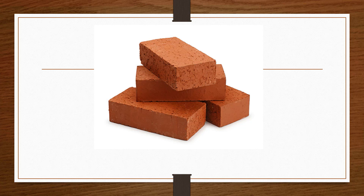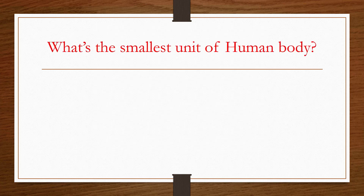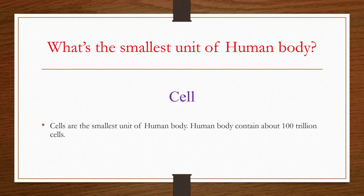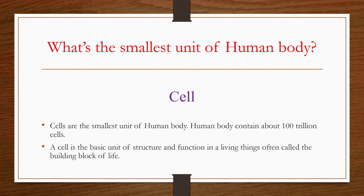Each part of the body carries out a specific function. So what is the smallest part of the human body? It is a cell. Cell is the smallest unit of the human body, and the human body contains about one hundred trillion cells. Cells are also called the building blocks of the body — they build our muscles and our body structure.